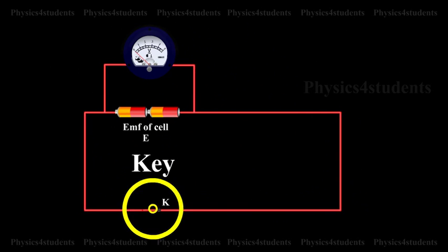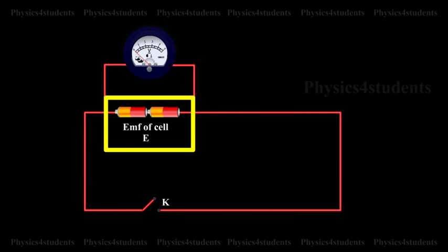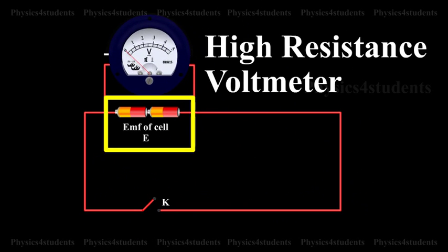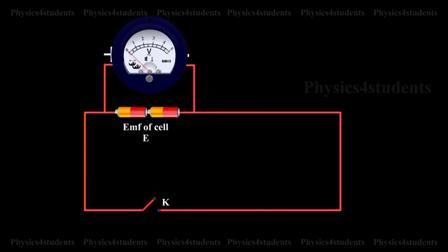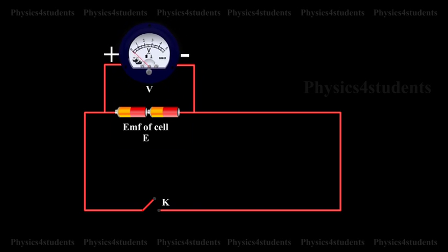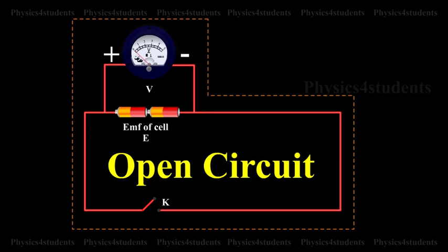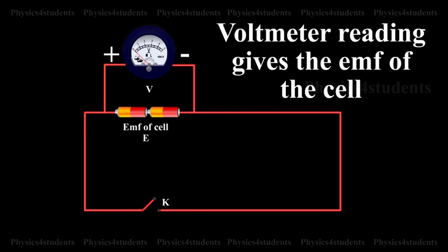With K open, the EMF of cell E is found by connecting a high resistance voltmeter across it. Since the high resistance voltmeter draws only a very feeble current for deflection, the circuit may be considered as an open circuit. Hence, the voltmeter reading gives the EMF of the cell.